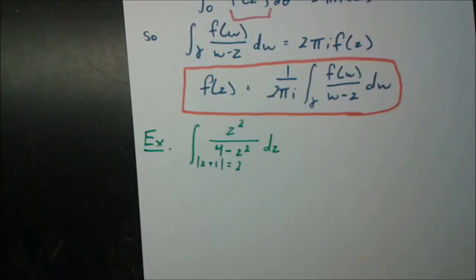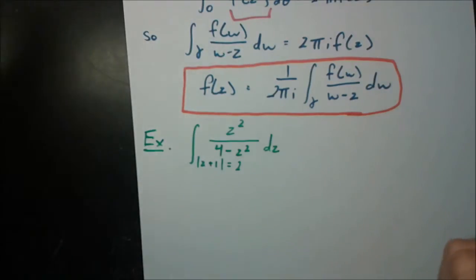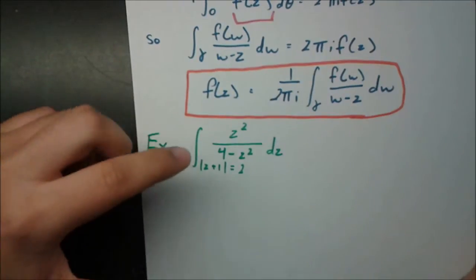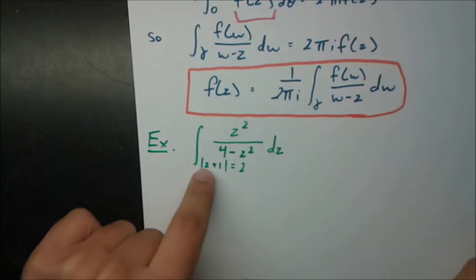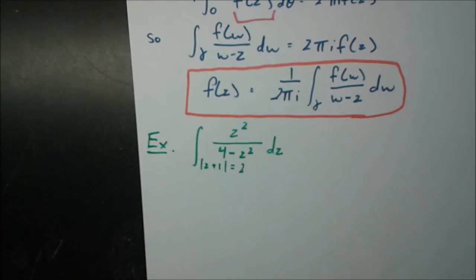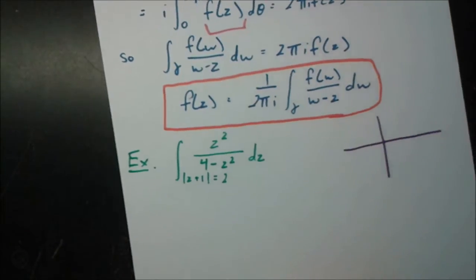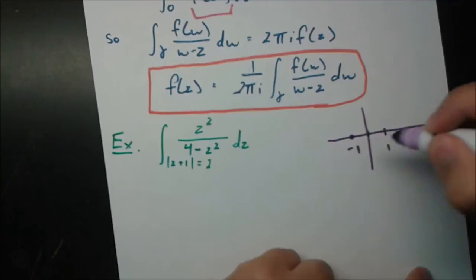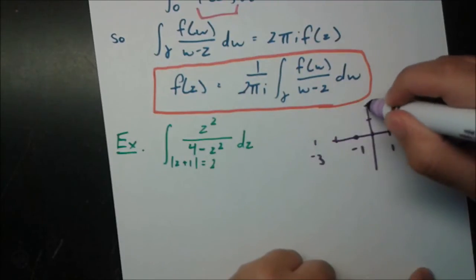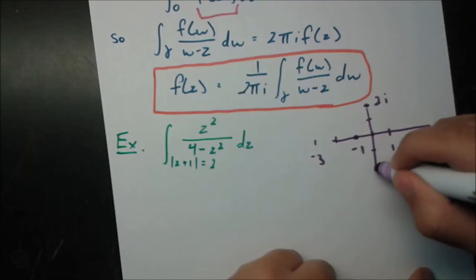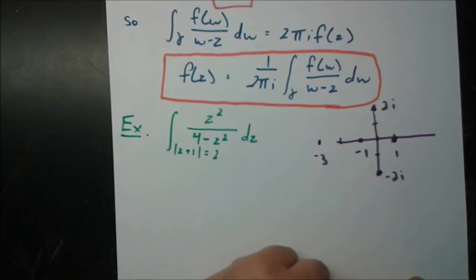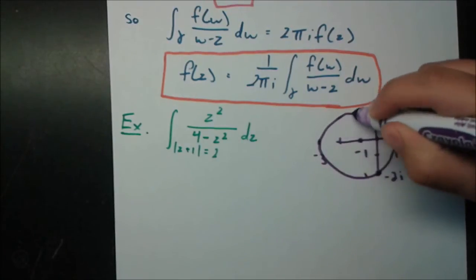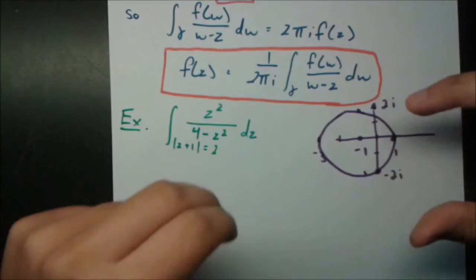Now let's do an example to see why this is useful. We want to evaluate the integral of z² / (4 − z²) on the curve gamma: modulus of z plus one equals 2. First, always draw a graph. Gamma is centered at −1 with radius 2, so it reaches to 1 on the right, −3 on the left, 2i at the top, and −2i at the bottom.